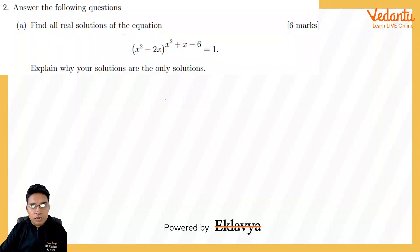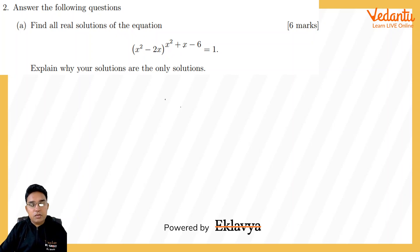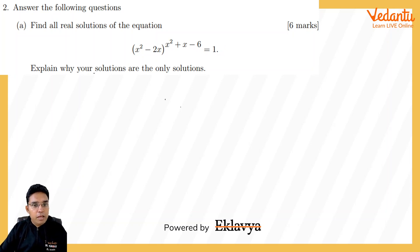Find all real solutions of the equation where (x²-2x) is the base and (x²+x-6) is the power, and the whole thing equals 1. Explain why your solutions are the only solutions. To understand this, let me write the scenarios under which a base-exponent expression equals 1.